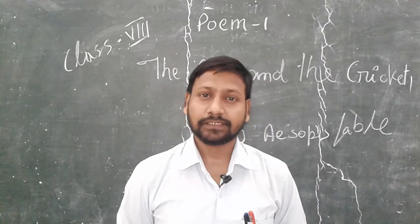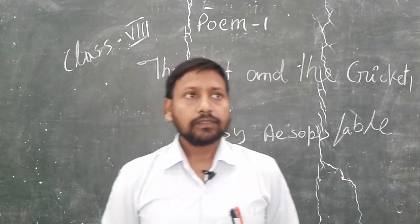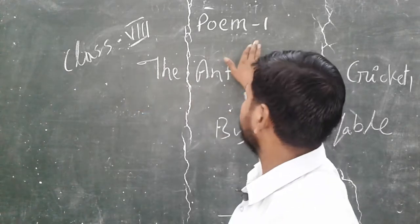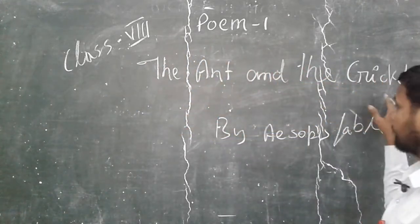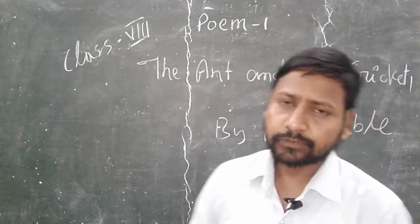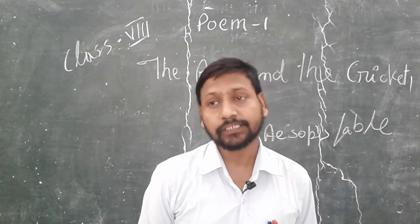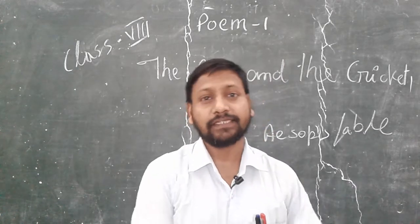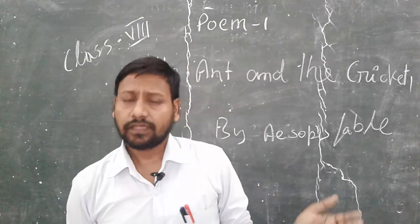We are going to start with this poem. So my dear students, this is your first poem, Class 8 - 'The Ant and the Cricket' by Aesop's Fable. Aesop's Fable means it is a story which has been recited by our parents and grandparents. So this is called Aesop's Fable.